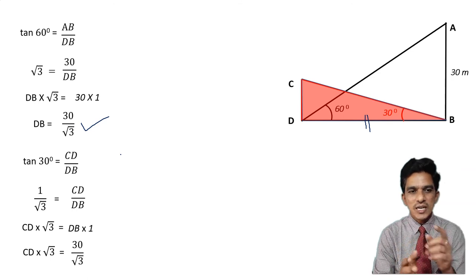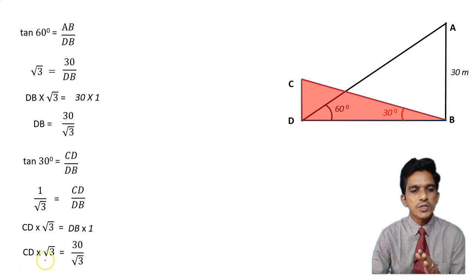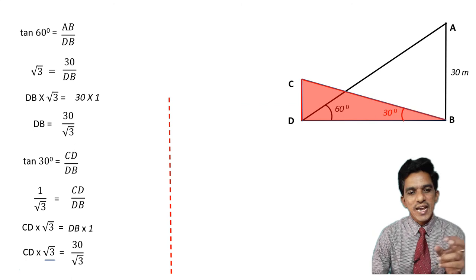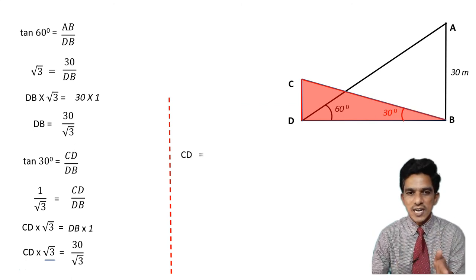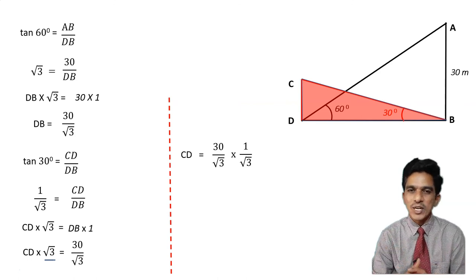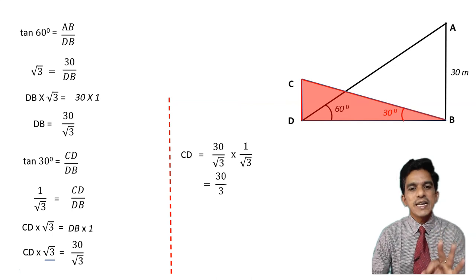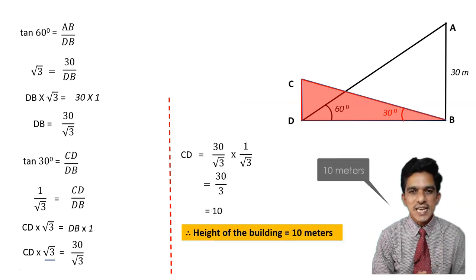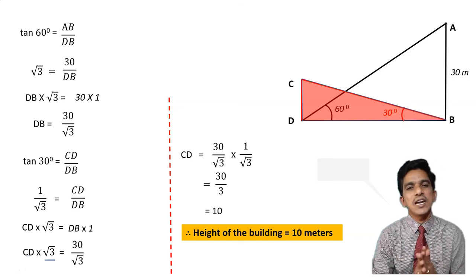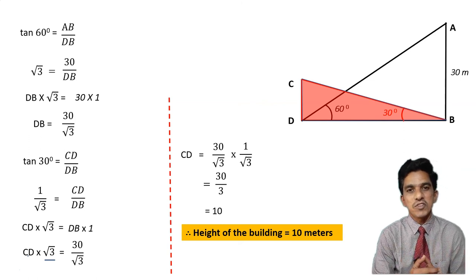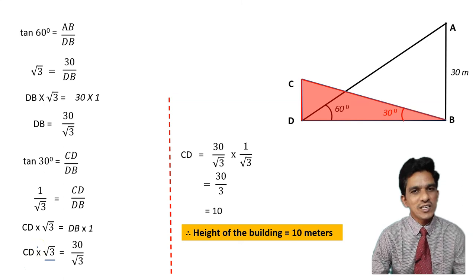Continuing: CD × √3 = 30/√3, which means CD = 30 / (√3 × √3) = 30/3 = 10 meters. Since 30/3 = 10, CD equals 10 meters. Therefore, the height of the building is 10 meters. We used DB as the common side between both right-angled triangles to solve this problem.